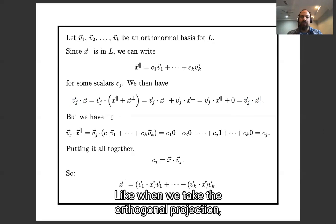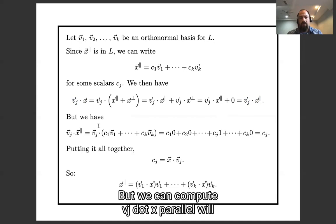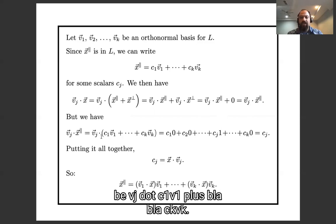When we take the orthogonal projection, vj dot x-parallel will be the same as vj dot x. But we can compute vj dot x-parallel will be vj dot c1 v1, plus blah blah blah, ck vk.